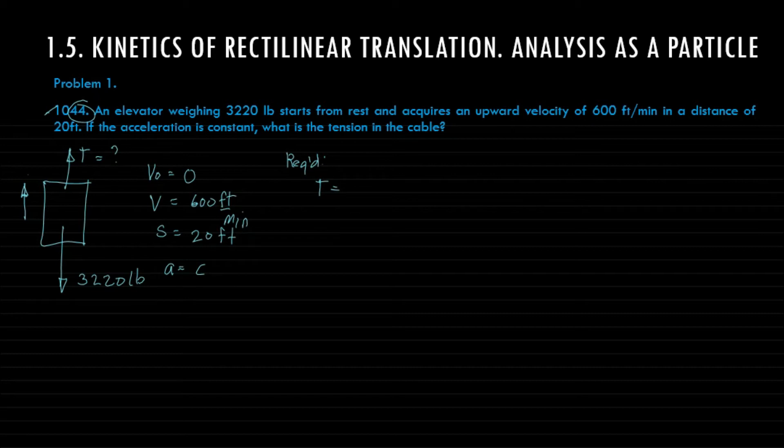Using our formula, summation of X equals ma or W over g times a. Since the direction of the elevator is upward, we will assume that the upward forces are positive. Mostly the positive forces are those along the direction of motion.